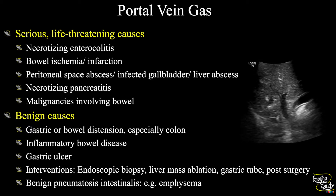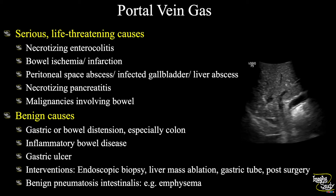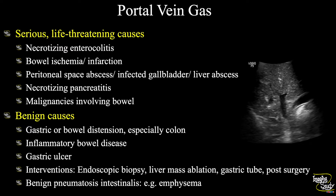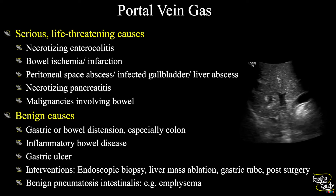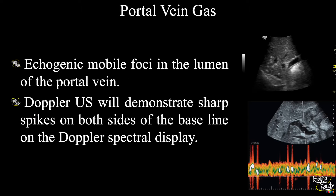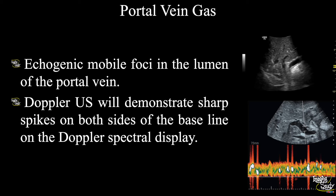You may also find this in benign pneumatosis intestinalis, where you'll see air within the intestinal blood vessels, which can be well seen on CT scan. Now, what will be the ultrasound findings?